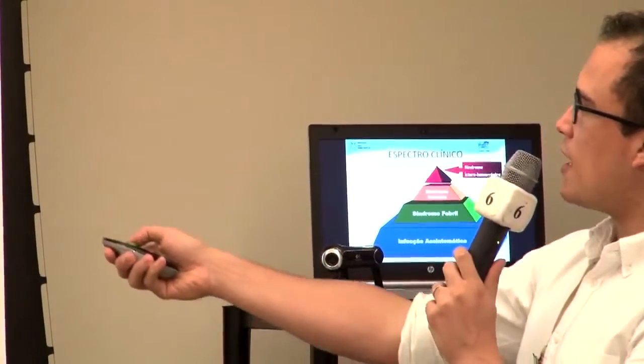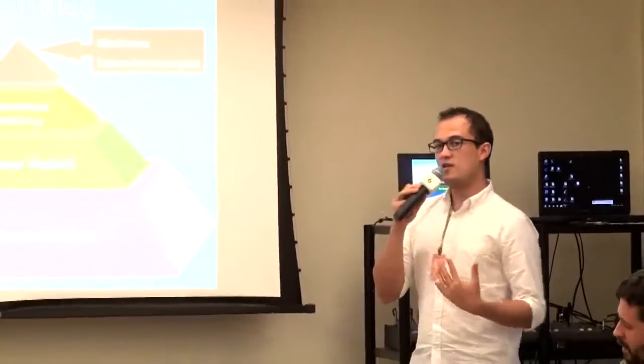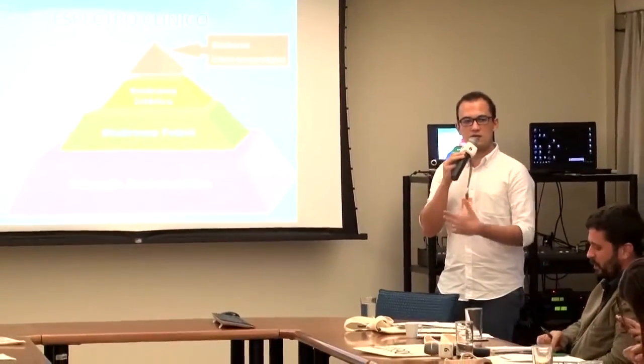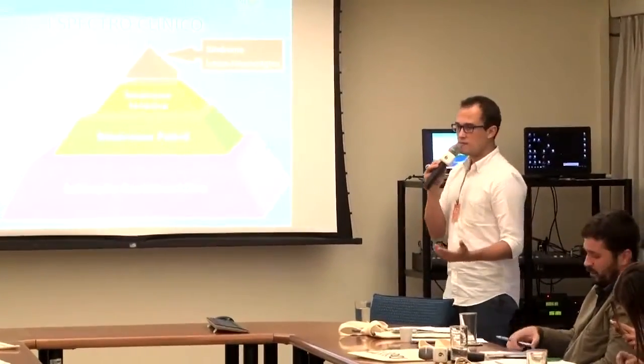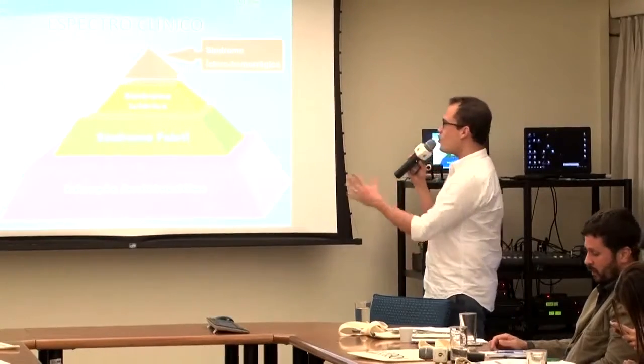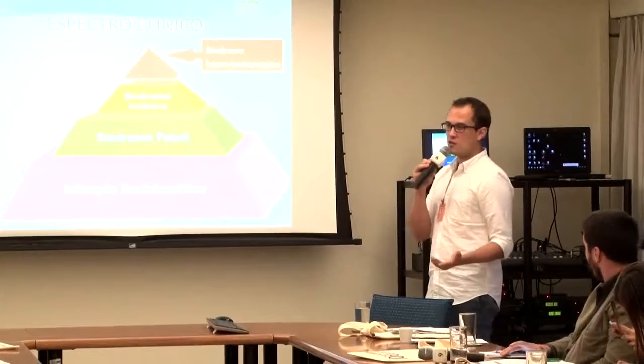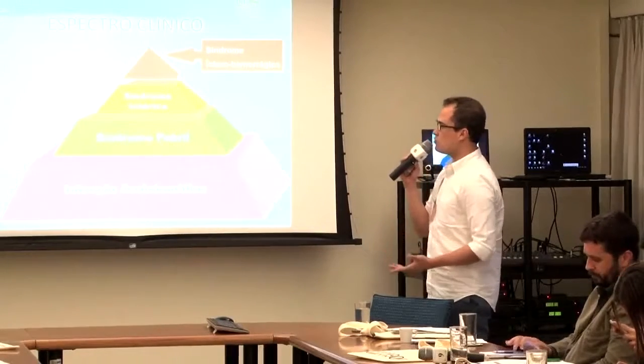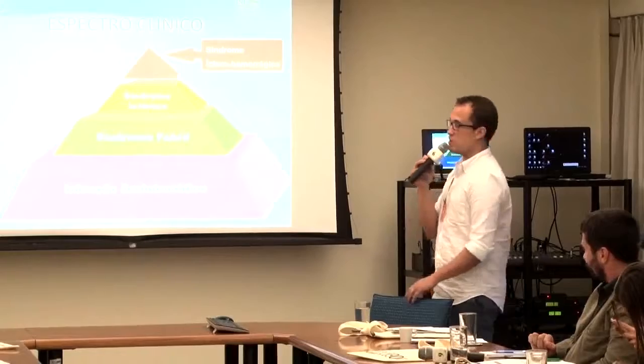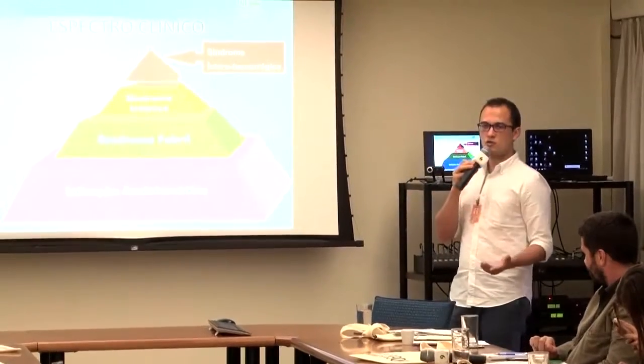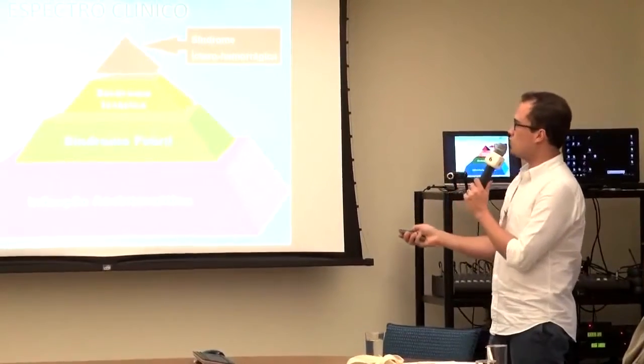Sobre o espectro clínico da febre amarela, a gente está preocupado com a doença grave, que é uma doença íctero-hemorrágica. Ícteро é o amarelado, aquela icterícia — uma pessoa ictérica está amarelada. É hemorrágica porque tem fenômenos hemorrágicos. Mas a gente vai ter desde pessoas infectadas com quadros bem leves ou mesmo assintomáticos, ou um quadro febril indiferenciado semelhante a várias outras causas, até quadros graves que podem ter evolução fatal.